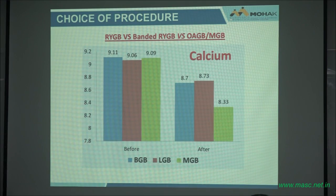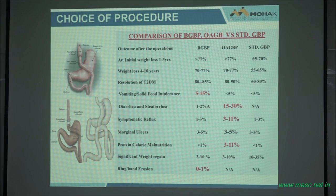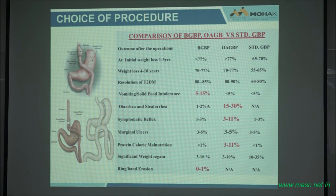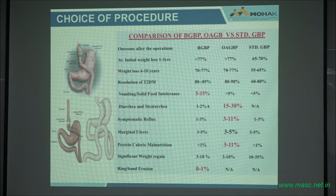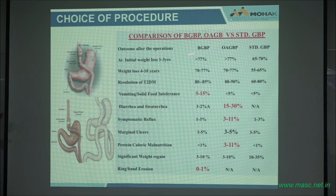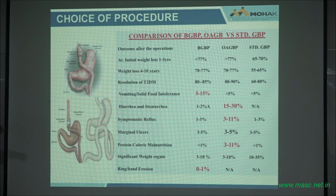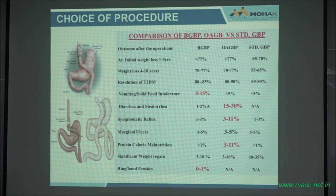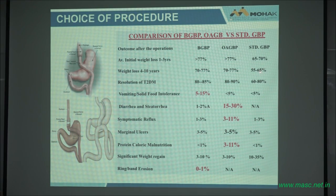The albumin level is related to the calcium level, so you expect the calcium level to be low as well. If you look at the three bypasses and compare papers with six to ten year data, the banded gastric bypass and the MGB are about similar — even four to ten years similar — but the regular gastric bypass starts failing. Resolution of type 2 diabetes: the banded and MGB are about the same, the regular gastric bypass is less effective.